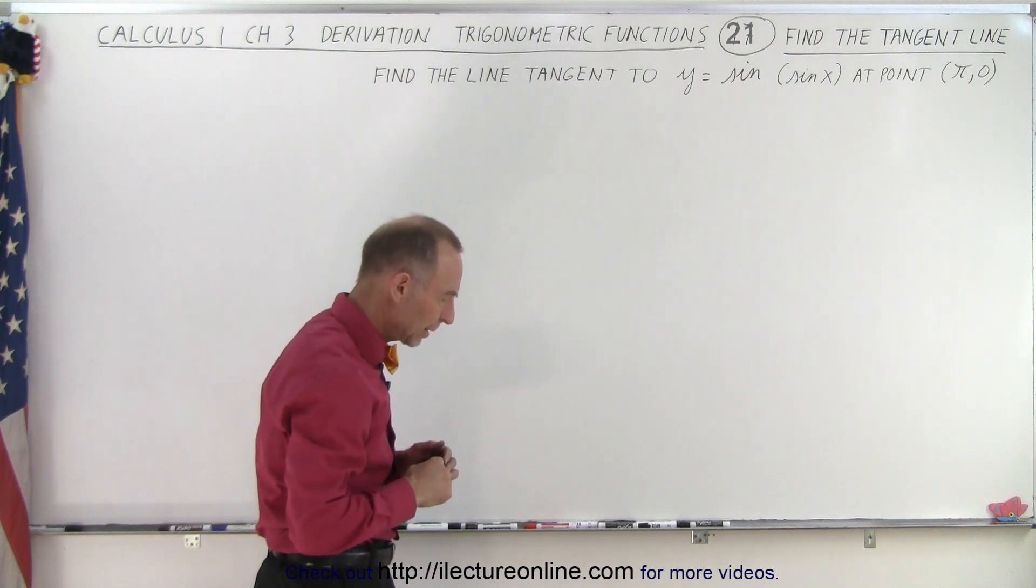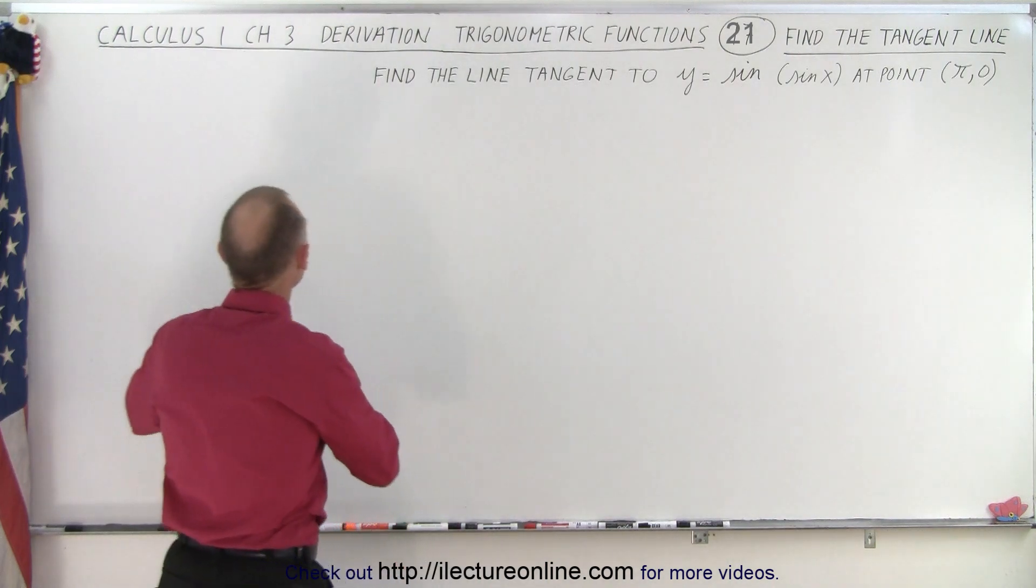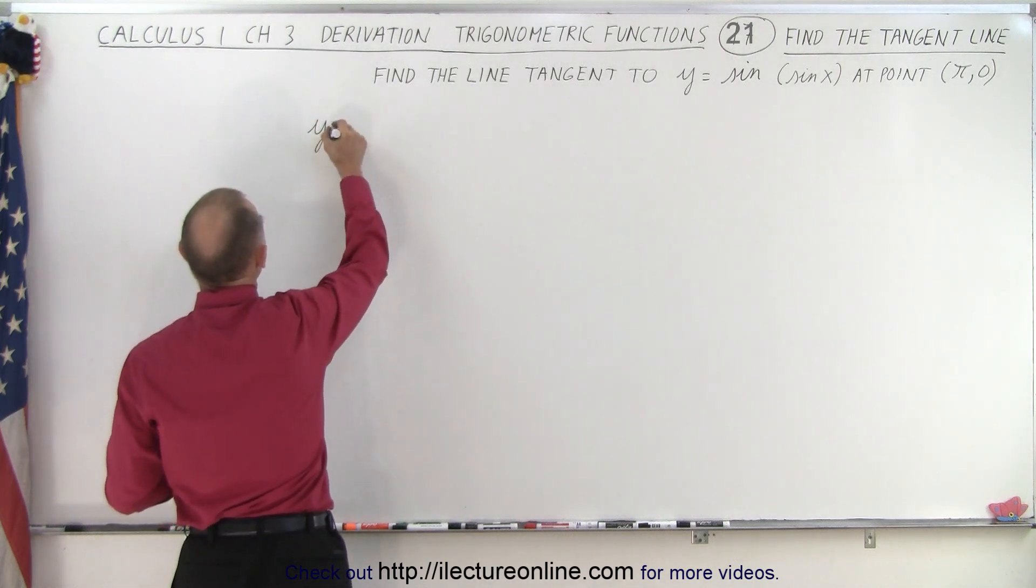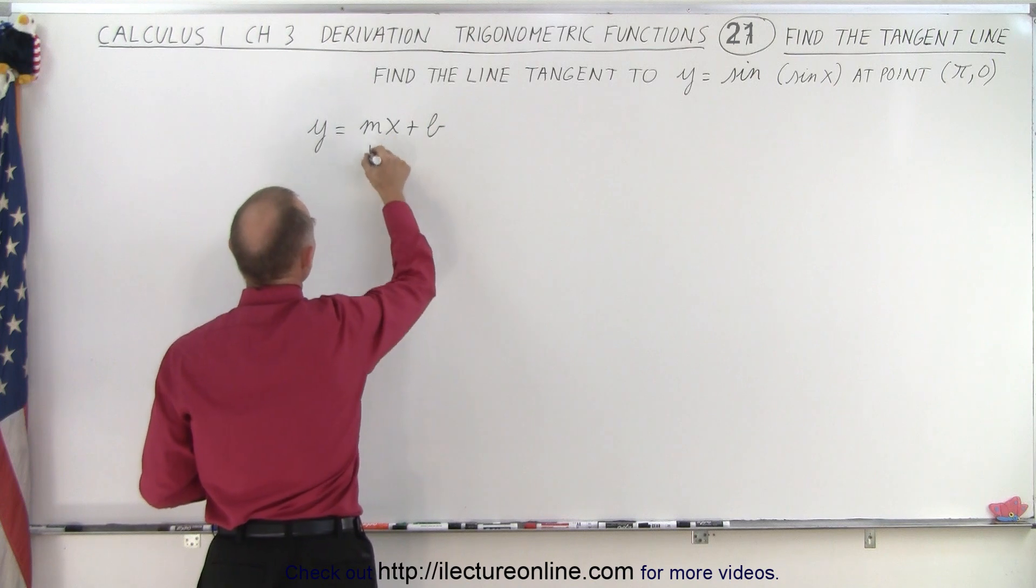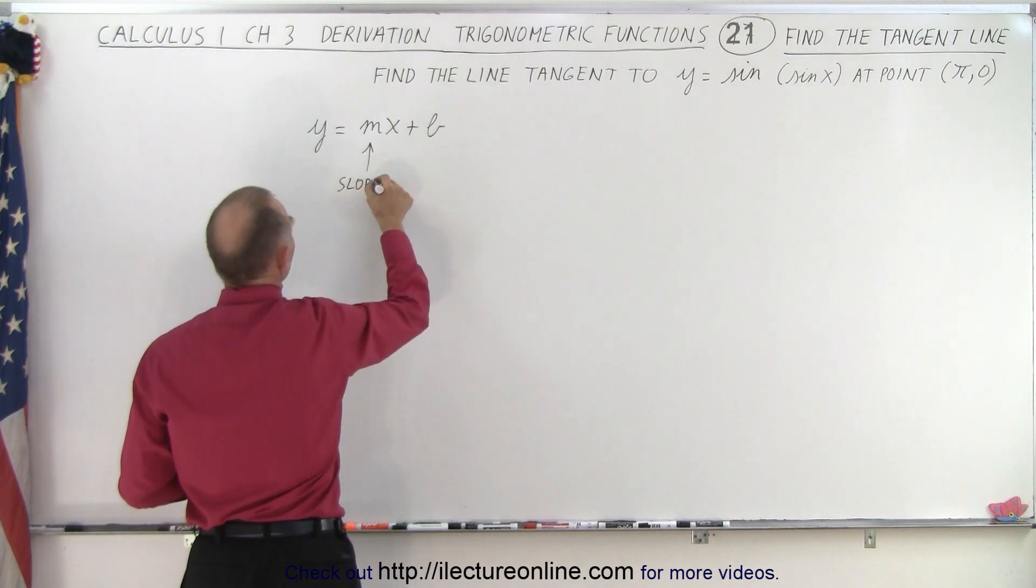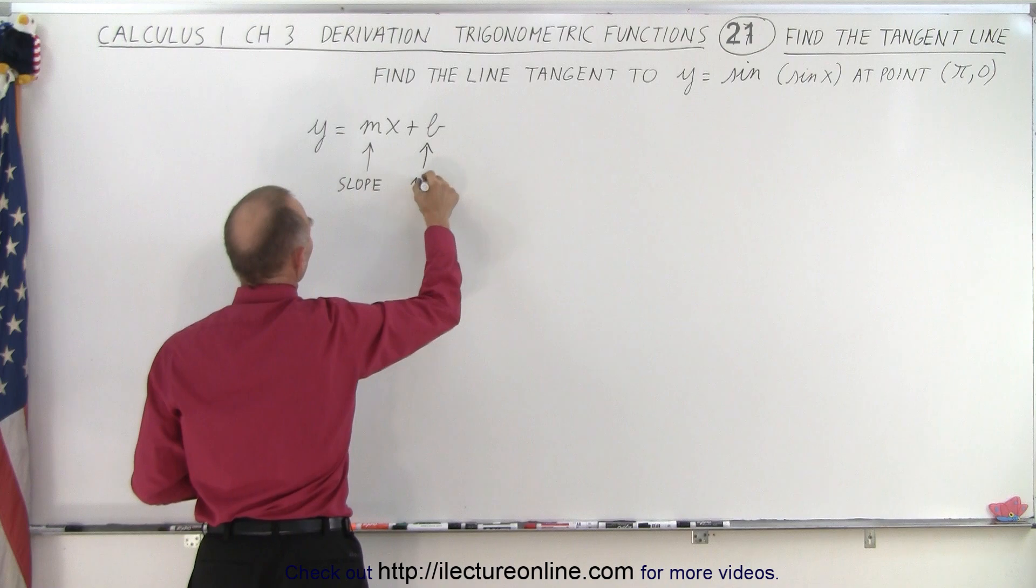In order to find the line, that means we need something in the form of y equals mx plus b, because that's the general equation of a line, which means we need to find the slope of the line and we need to find the y-intercept.